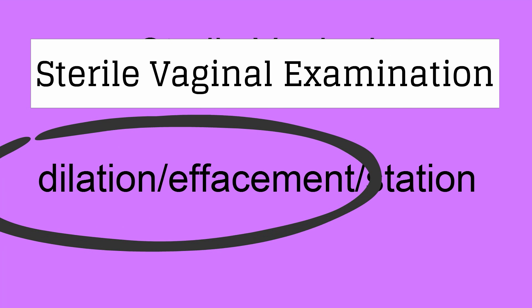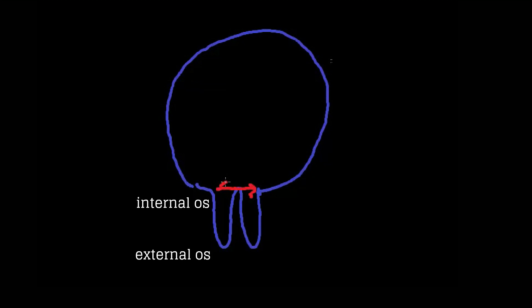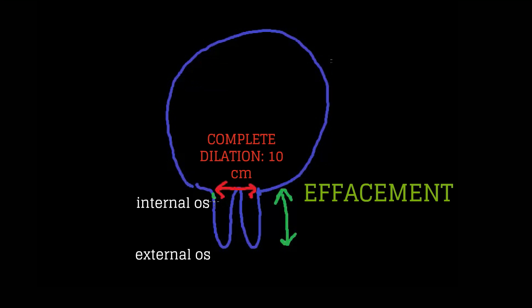Cervical dilation refers to the opening of the internal os, with complete dilation being 10 cm. The cervix also undergoes effacement, meaning it thins out — the distance between the internal os and the external os becomes zero. A non-effaced cervix is about 4 cm. A cervix that is about 50% thinned out is approximately 2 cm, and a completely effaced cervix is 0 cm thick.